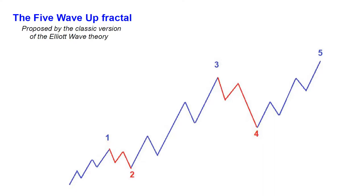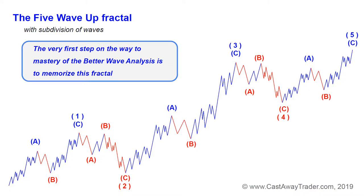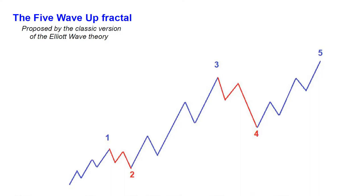I practice a different spin of the Elliott wave theory, the so-called harmonic Elliott wave theory. This is the 5-wave-up fractal proposed by that modified, or as I call it, the beta version of the Elliott wave theory. It has more details, it has more rules, and it lets you double-check your count to avoid such mistakes as the count I've just shown you.